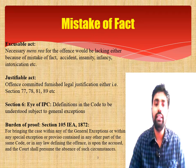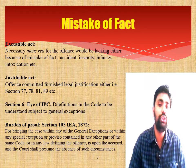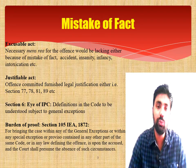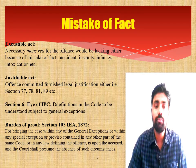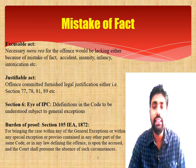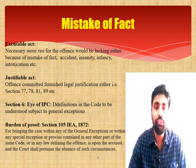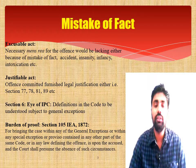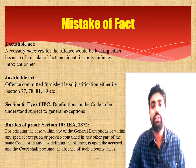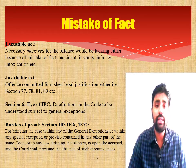In all excusable cases — act done in case of mistake of fact, accident, insanity, infancy, or intoxication — the necessary mens rea is absent. For example, if an insane person commits murder under an insane delusion, he cannot be punished by virtue of Section 84. Similarly, a child below seven years cannot understand the nature and consequence of the act; thereby mens rea is absent, and he can claim exemption under Sections 82 and 83.